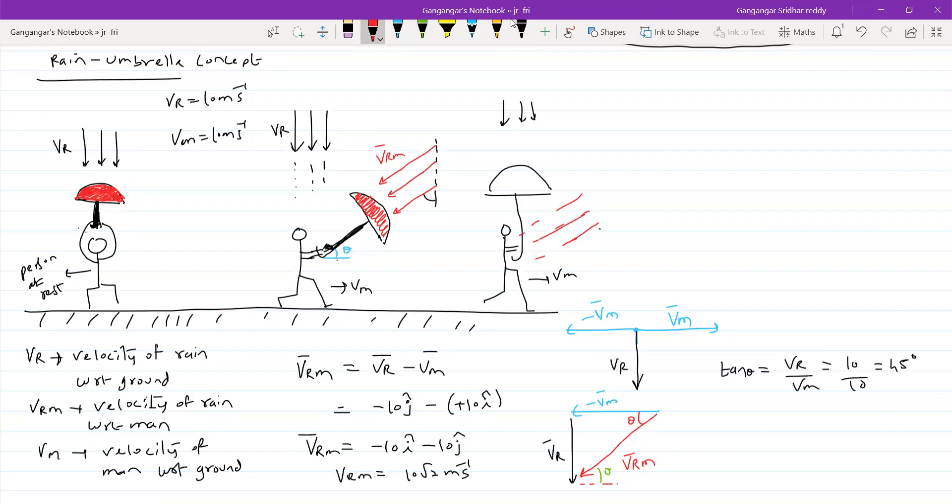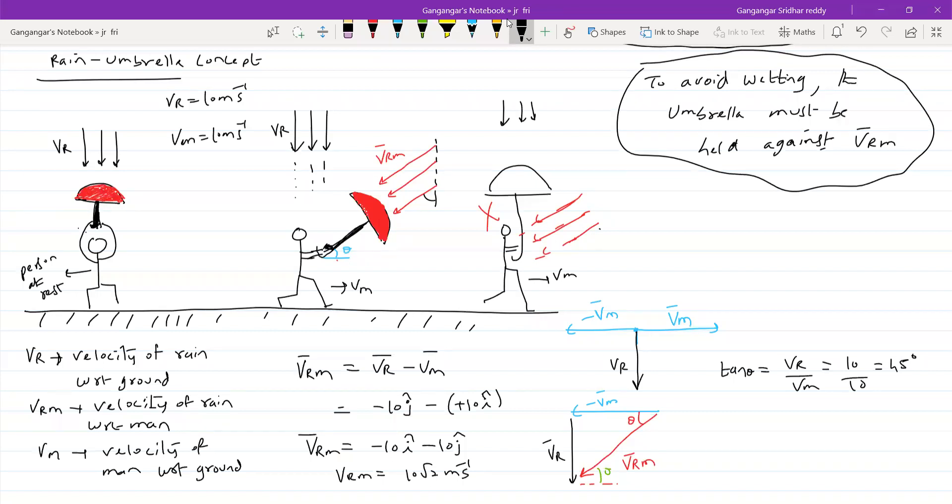If he wants to get wet, then better take out the umbrella - why struggle so much? Not to get wet is the condition I'm discussing. To avoid wetting is what we're discussing. The basic necessity condition to avoid wetting: the umbrella must be held against vrm bar. That's the total idea of the entire numericals we're going to discuss. When will he get wet? This is a wrong position. To avoid wetting, this diagram is wrong.